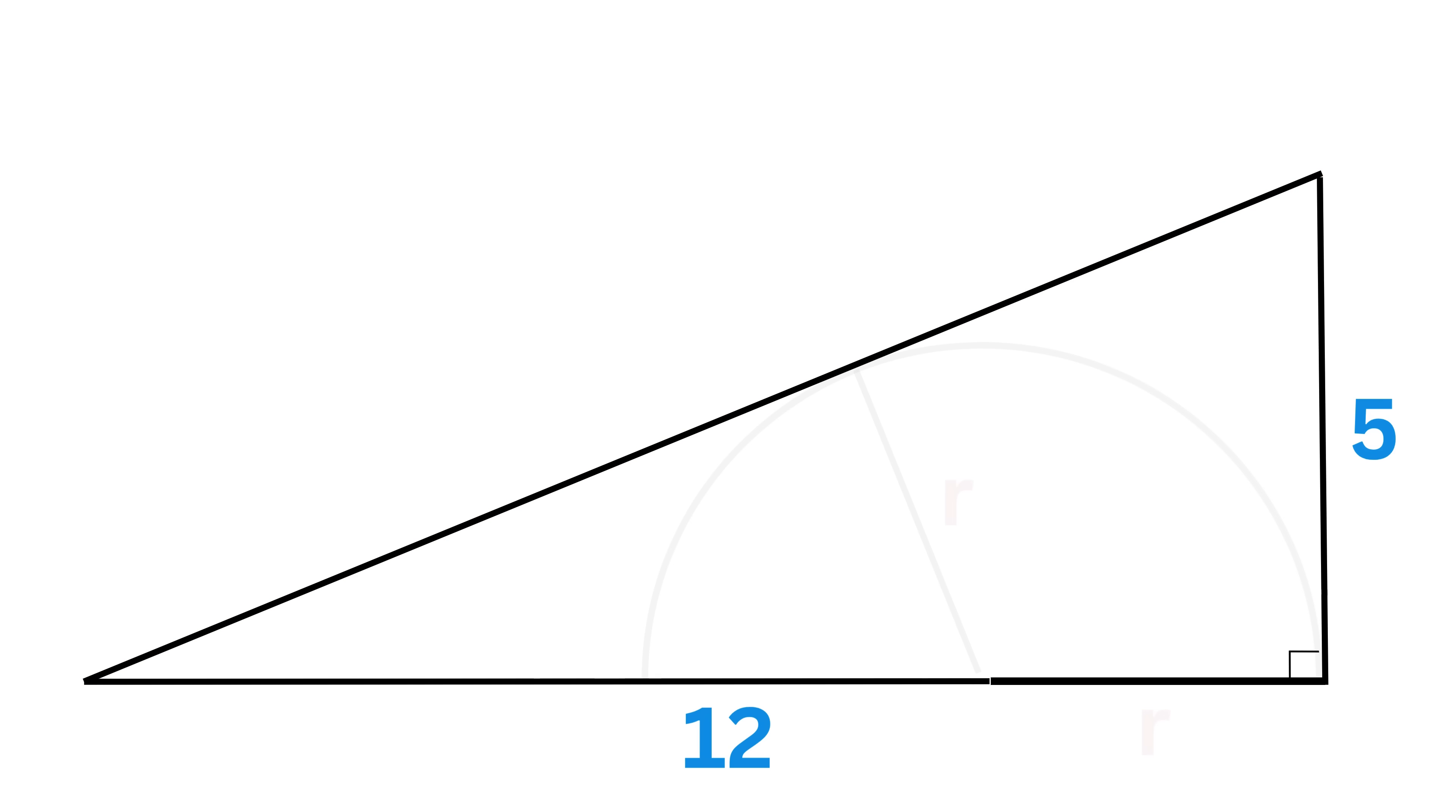Consider this right triangle. If this is 5 units and this is 12 units, what will be the length of the hypotenuse, which we label as H? Yes, right! It will be H which equals the square root of 5² plus 12², or 25 plus 144, or the square root of 169, which is 13. So the hypotenuse is 13 units. Great.